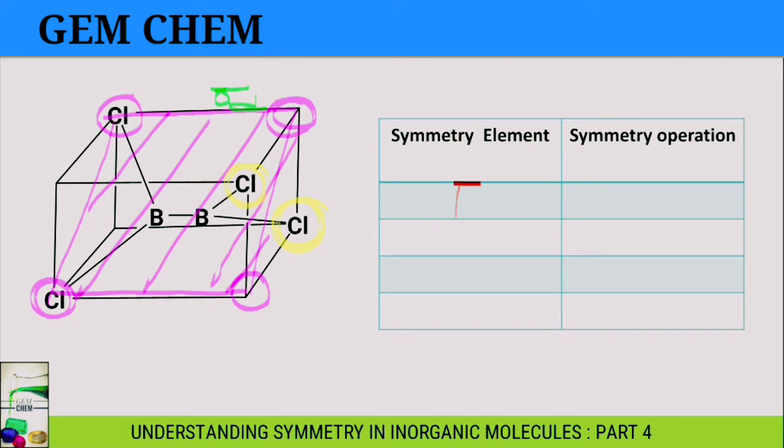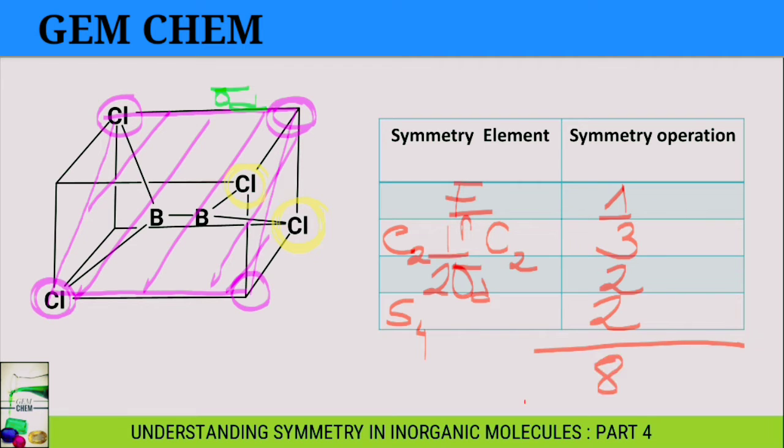First one we have is E which is 1. Next we have C2, and along with it there are perpendicular C2s, so there are three C2s. Two sigma D, so there will be two operations, and we have an S4 operator with two symmetry operations. So total we're getting eight symmetry operations. Since there is presence of perpendicular C2s, we can write the point group as D2D.